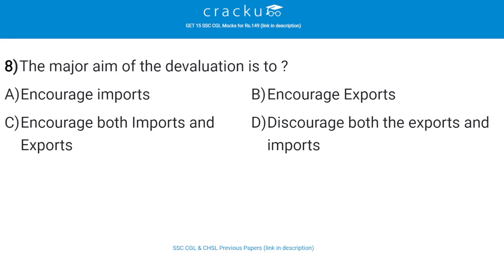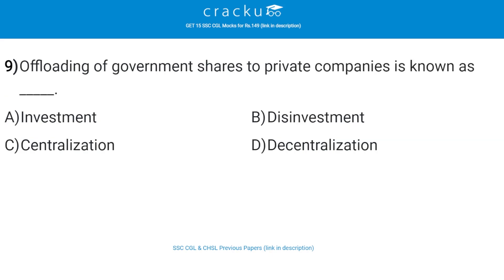The major aim of devaluation is? The correct answer is B, that is to encourage exports. Offloading of government shares to a private company is known as? The correct answer is B, that is disinvestment.